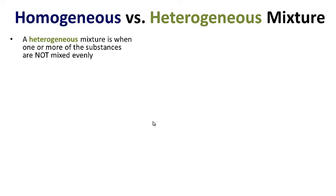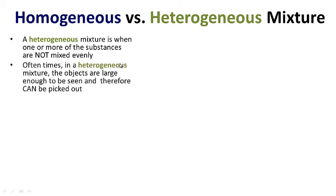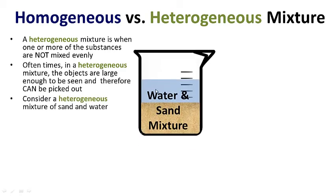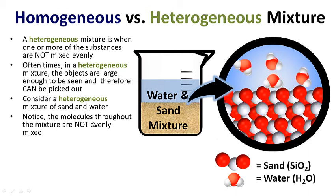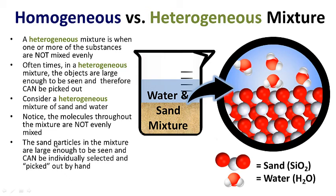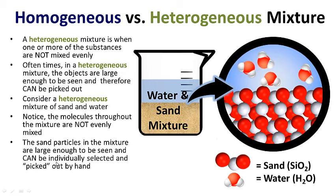Heterogeneous mixtures are different. A heterogeneous mixture is when one or more of the substances are not evenly mixed. Oftentimes the objects are large enough to be seen and can be picked out by hand. Consider a heterogeneous mixture of sand and water — the molecules throughout the mixture are not evenly mixed. Down here we have sand, up here we have water. The sand particles are large enough to be seen and can be individually selected and picked out by hand.